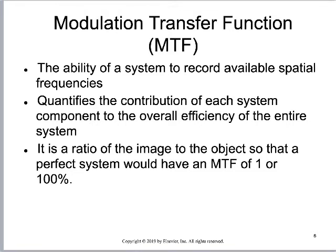If the system can see smaller and smaller lines, it has a better and better modulation transfer function. MTF is expressed as a percentage value. The flat panel detector system, particularly the direct radiography system, is going to consistently have the best MTF — we want a number close to 1, where 0 to 1 represents 0% to 100% representation. The closer to 1, the better the system can represent that tiny object.